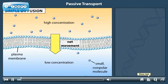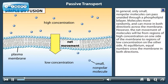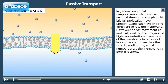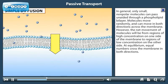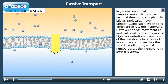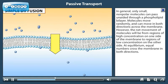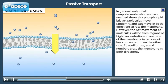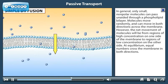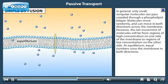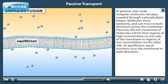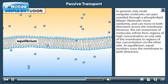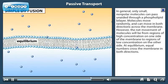In general, only small nonpolar molecules can pass unaided through a phospholipid bilayer. Molecules move randomly and can move in both directions across the membrane. However, the net movement of molecules will be from regions of high concentration on one side of the membrane to regions of low concentration on the other side. At equilibrium, equal numbers cross the membrane in both directions.